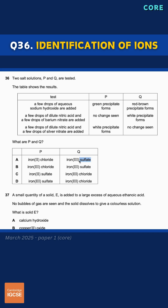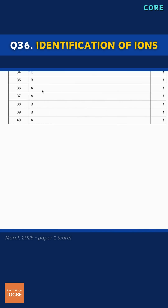So it contains sulfate ions, and solution Q is therefore iron-3 sulfate. The correct row in the table is A, which we can confirm by referring to the mark scheme. For everything you need to know on this, check out my video on identification of ions and gases.